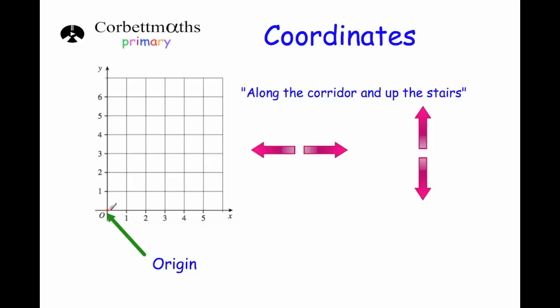This point here is very important — it's the point (0, 0), it's called the origin and it has a little letter O beside it. It is the point where you start out whenever you're looking at coordinates, so it's a very important point.